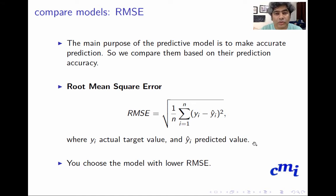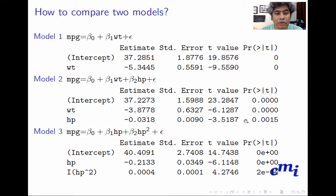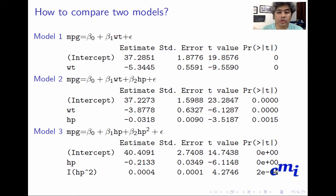Naturally, if you have three models you look at the RMSE of all three and choose the one with the lowest root mean square error. So for these three models, I calculate each model's RMSE and select the model with the minimum RMSE — that will be my choice.